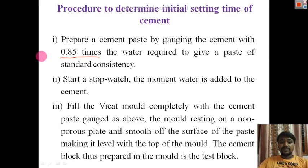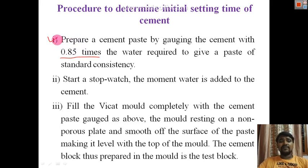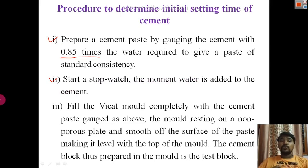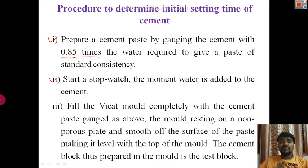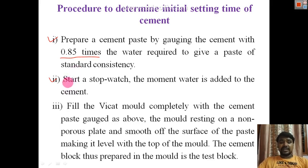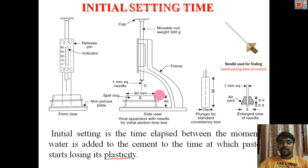For example, if normal consistency is 35 percent, multiply 0.85 by 35 percent of the cement weight to get the water quantity. Start the stopwatch the moment water is added to cement, to track gauging time. The cement paste should be prepared within three to five minutes. Then fill the Vicat mold, placing the glass plate at the bottom first.